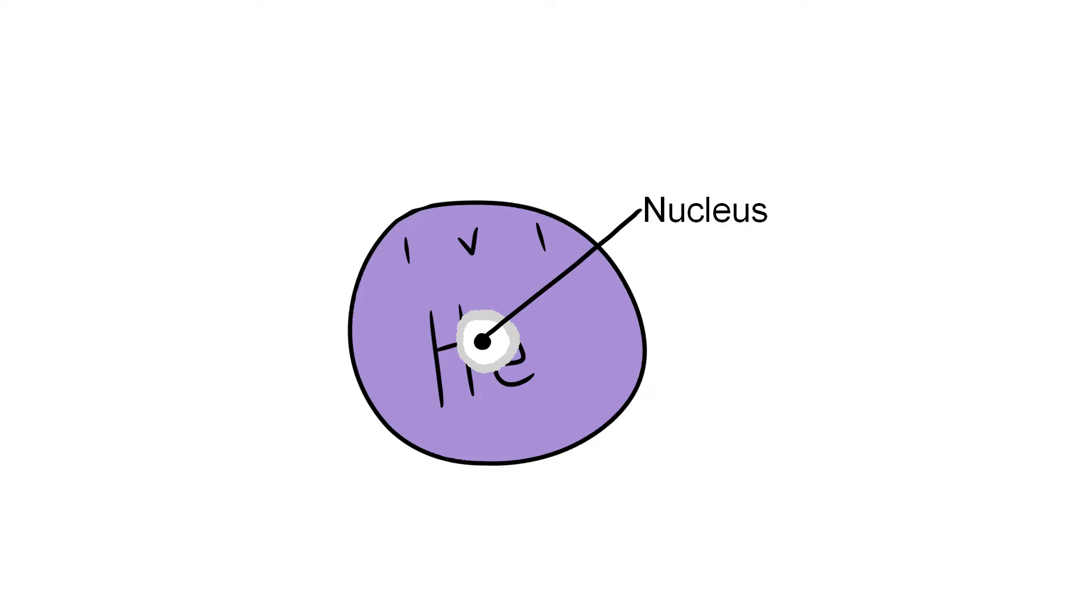The center area of him is called the nucleus. Located here are two particles, neutrons which are neutral and protons which are positive. The area surrounding him is called the electron cloud. Here you find electrons. They are negatively charged.